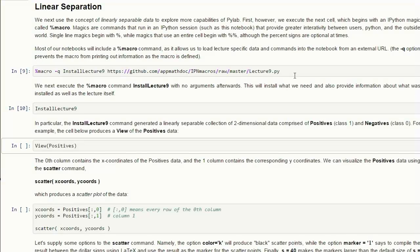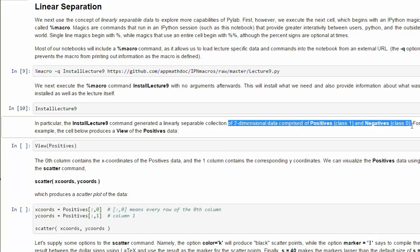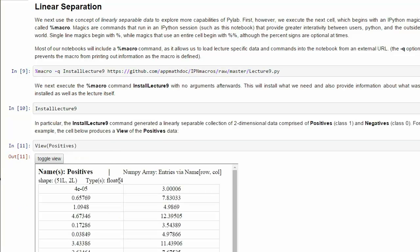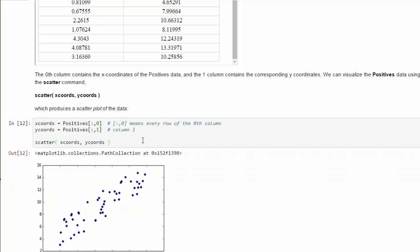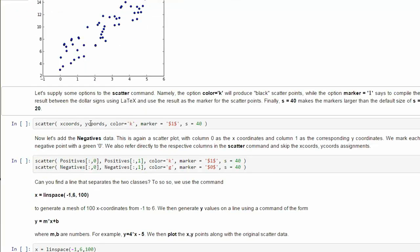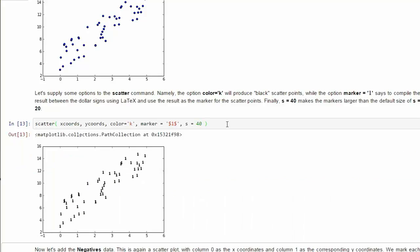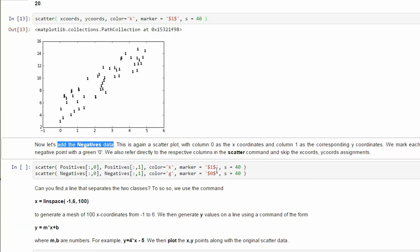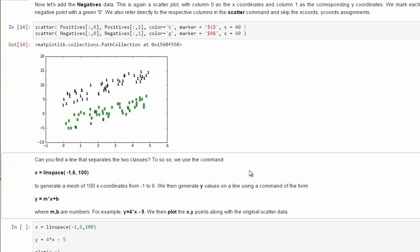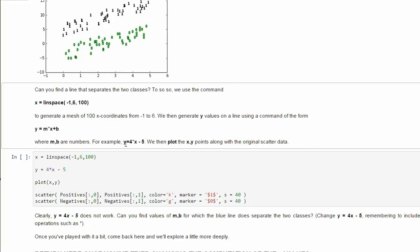Let's look at the IPython notebook to see an example of this idea. When we install lecture 9, it will install a set of positives and a set of negatives, which is class 0 and class 1. There are the positives, they're just numbers in the plane. We can look at those with a scatter plot. There are the positives. Using Python, we can label those with a marker of 1 to show they're in class 1.